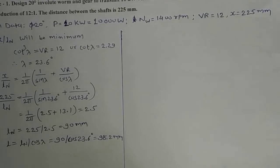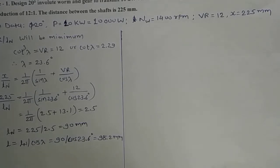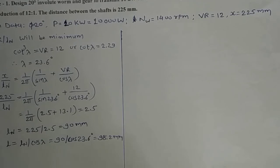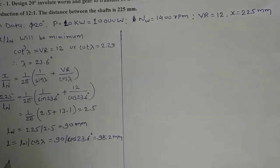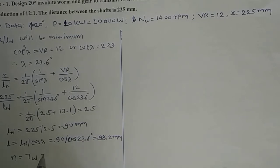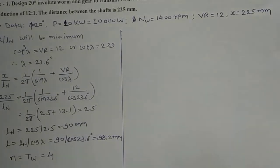From the velocity ratio of 12, using the design data book, the number of starts or threads on the worm T_W = 4. So the number of starts equals 4.